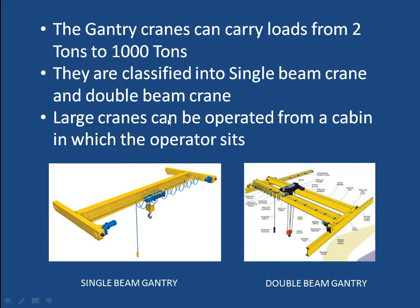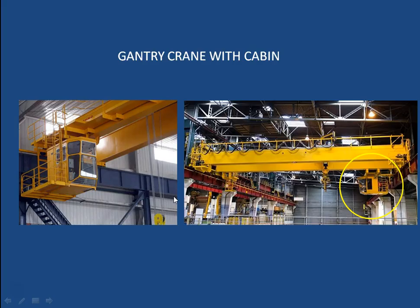Large cranes can be operated from a cabin in which the operator sits. Normally cranes are operated by a device suspended from the crane and operated from floor level. But for very large cranes there is a cabin with an operator. This is a pendant-type cabin — it hangs below the gantry and has glass not only on the sides but also at the bottom, giving the operator an overall view of the entire factory and a view downwards where operations are taking place.